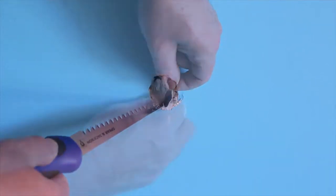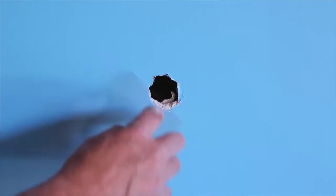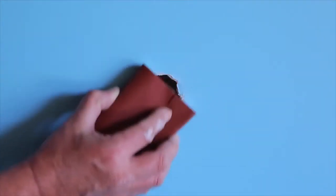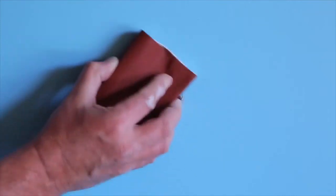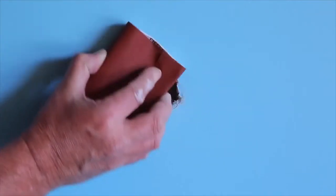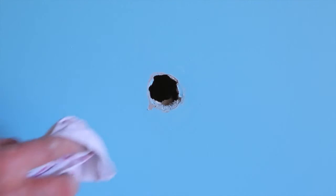Remove any plaster which is loose, dislodged, or flaky, then sand around the edges of the hole. This will prepare the surface, allowing the plasterboard repair patch and patching compound to stick to the wall surface.